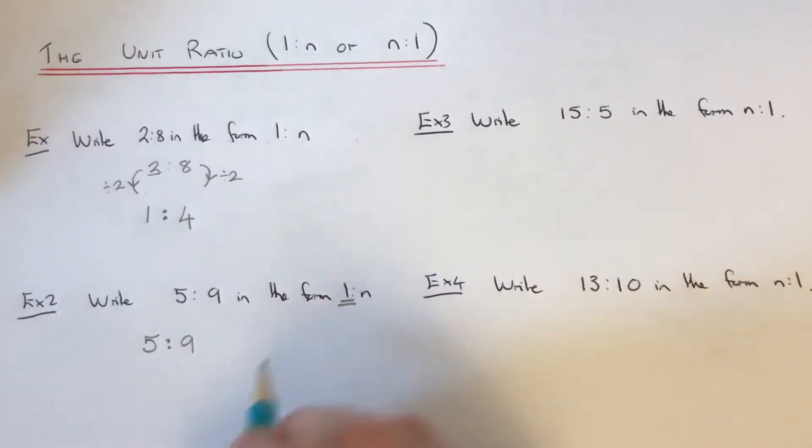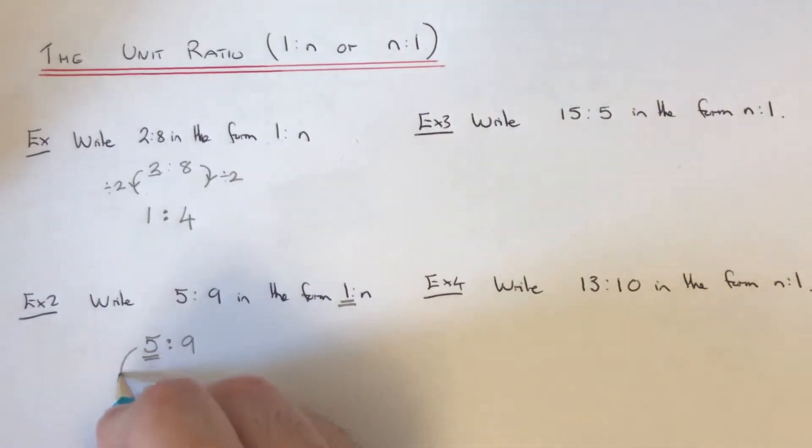So let's write our ratio down. So again, we want the 1 on the left hand side of the ratio. So we divide by this number on the left hand side, which is 5. So 5 divided by 5 is 1 and 9 divided by 5 is 1.8.